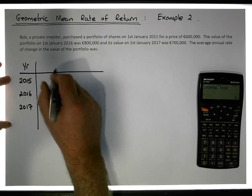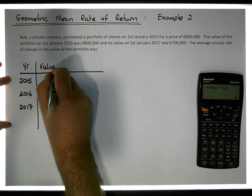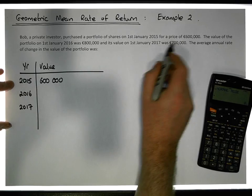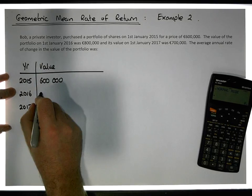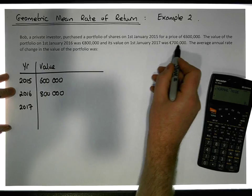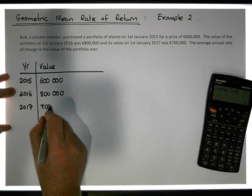And let's say we have the value of the portfolio. In 2015 it was 600,000 euros, in 2016 it increased to 800,000 euros, and in 2017 it decreased down to 700,000 euros.